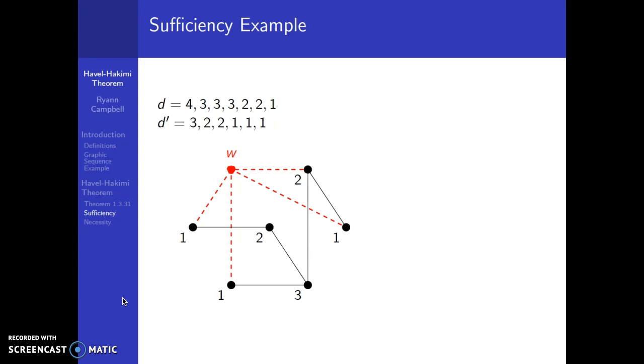Since d2 is 3, we are going to be adding on vertex w. It is going to be adjacent to a vertex with degree 2, 2, 2, and 1, because those are d2 minus 1 all the way through d(Δ+1) minus 1.